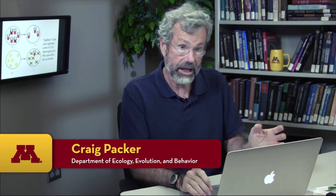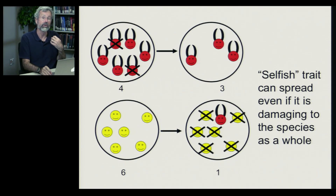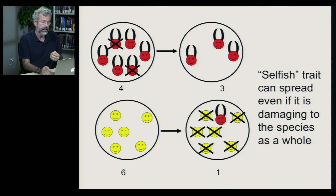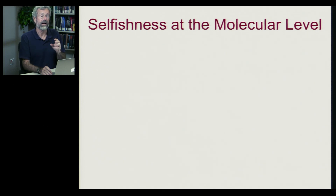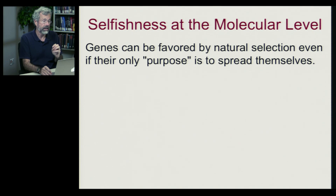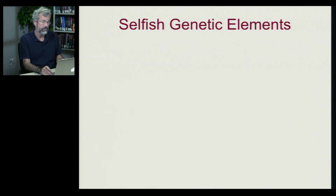Today I want to take selfishness to its logical limits. In the last lecture, I hope you got how robust selfish behavior is within a population of individual organisms — so that even though we might all do better if we all got along, selfish traits can spread even if it damages the species as a whole. Today I want to take that concept down to the molecular level and show you how genes can be favored by natural selection even if their only purpose is to spread themselves. These are called selfish genetic elements.